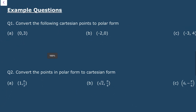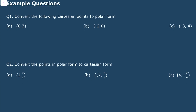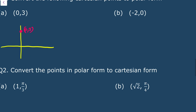Let's convert some Cartesian points to polar form. For the point (0, 3), which lies on the y-axis, I can see straight away that the distance r equals 3, and the angle is pi by 2. So in polar form, this coordinate is (3, pi/2).